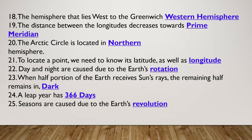The equator is in the middle horizontally, and the Greenwich Meridian is the Prime Meridian vertically. The latitude at zero degrees is the equator. The distance between the longitudes decreases towards the poles. The Arctic Circle is located in the north of the Northern Hemisphere. To locate a point we need to know its latitude as well as its longitude. Latitudes and longitudes together form a grid.